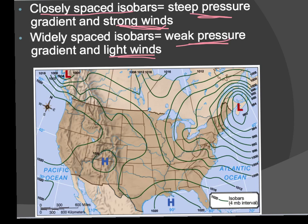If you're looking on the map here, you would characterize this area as having light winds — it's a weak pressure gradient because the isobars are so far apart. If you were looking for a place with strong winds, you would probably say somewhere around these parts because the isobars are so close together.